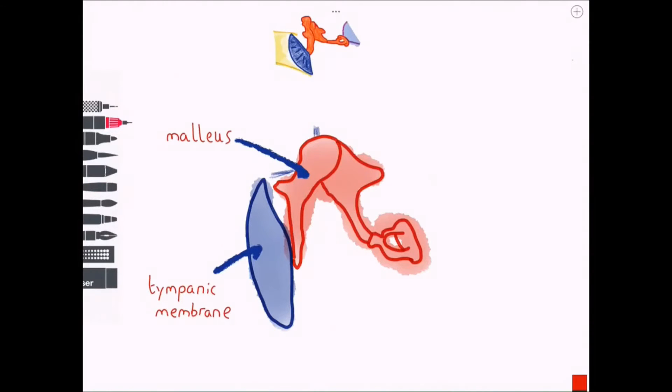The first, the malleus, is in contact with the tympanic membrane. The incus is the second bone in the middle and the stapes is the third bone shaped like a horseshoe.